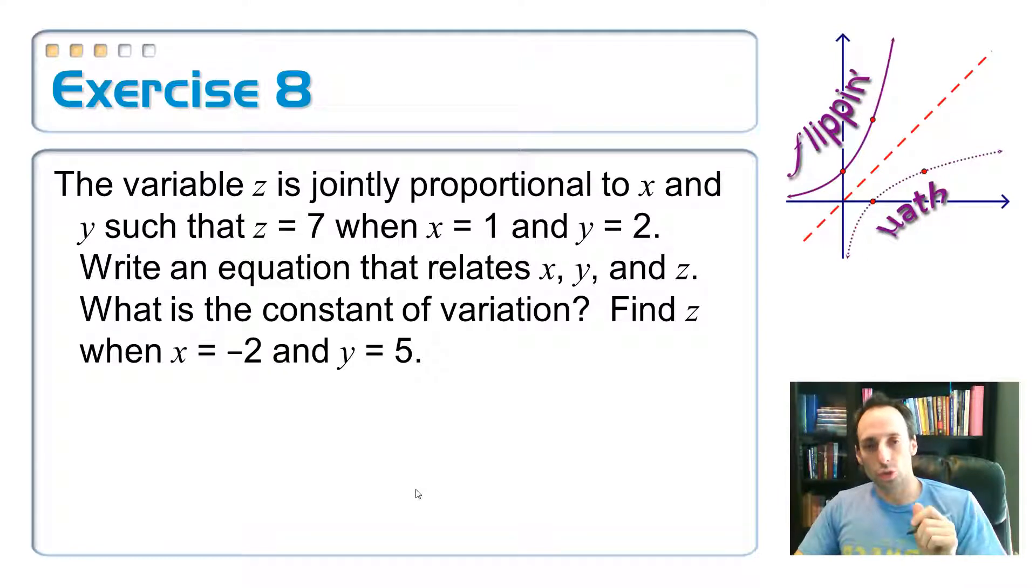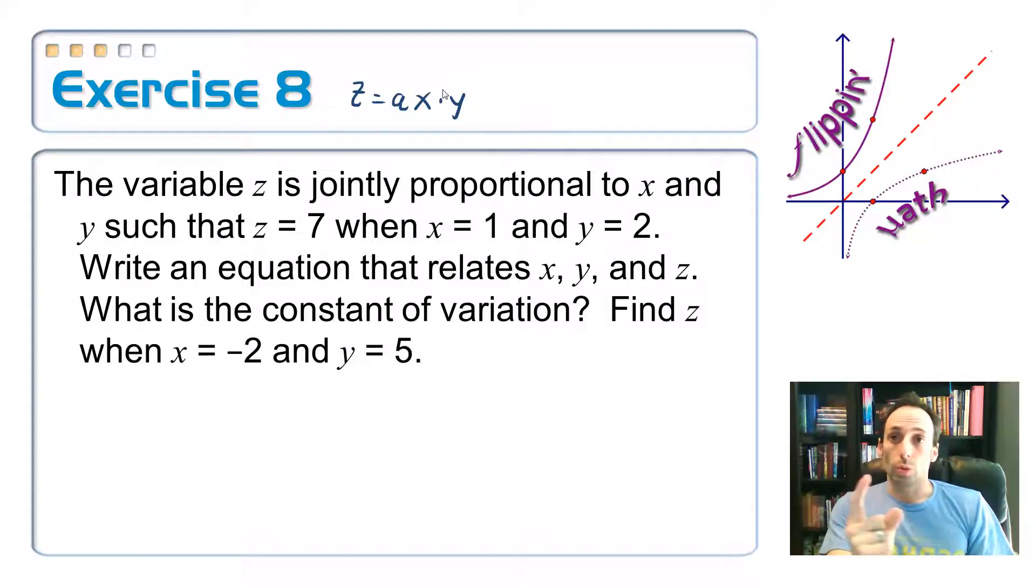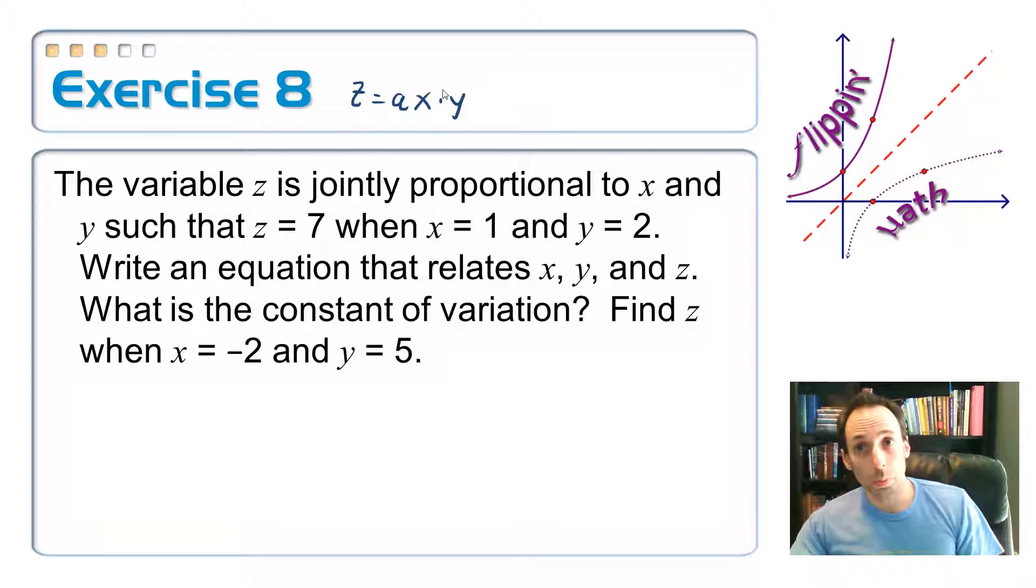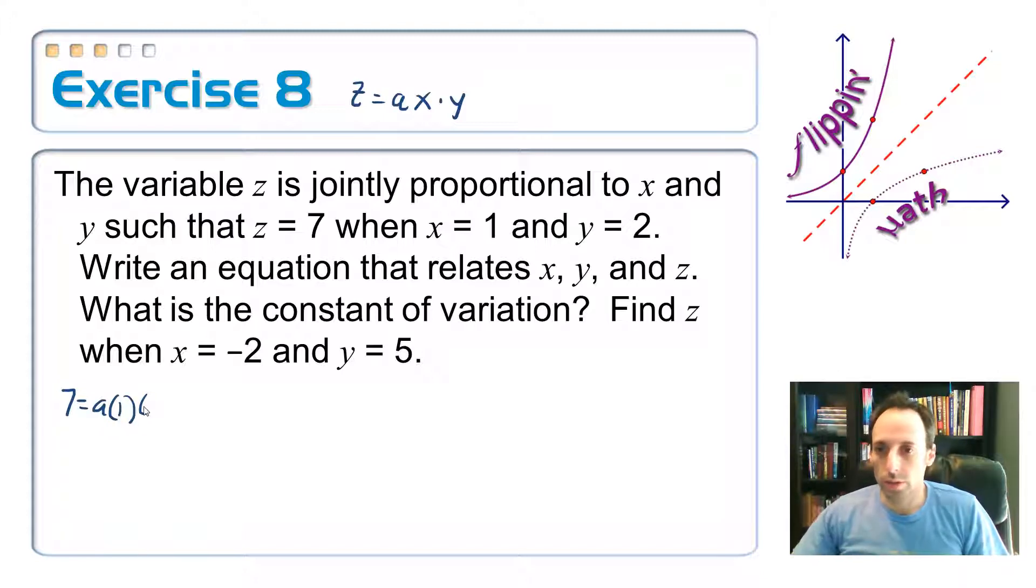The variable z is jointly proportional to x and y. So I'm going to write myself an equation like this: z is jointly proportional to x and y. So jointly proportional, it's very similar to directly proportional, just you've got another variable that you have to multiply in there. So let's put in all the numbers that it gives us. z equals 7, z equals a times x is 1 and y is 2. So I get 7 equals 2a and a equals 7 halves.